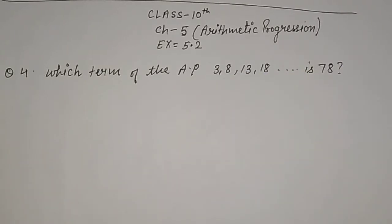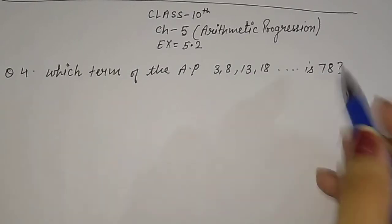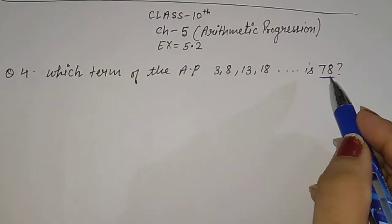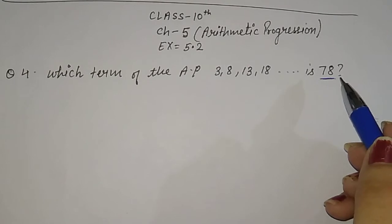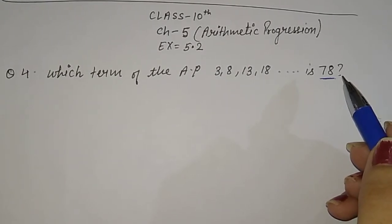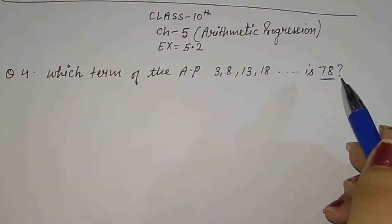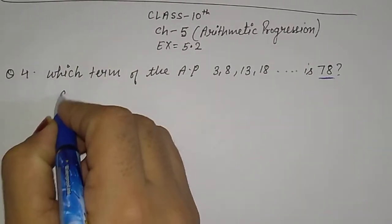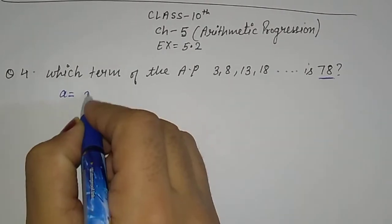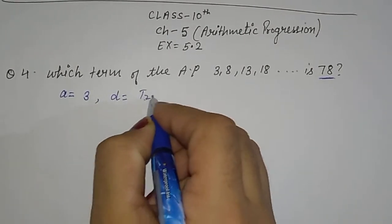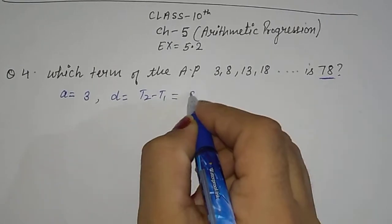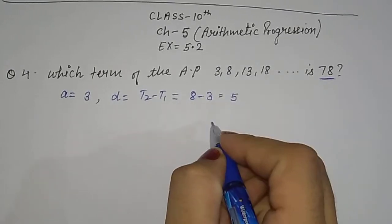Here you have no end term given. You have been asked which term equals 78 — meaning at which position does it occur? It could be at the 7th, 10th, 11th, or 12th place. You need to find that position. So first, what is given? a = 3. We find d: T2 minus T1 = 8 minus 3 = 5.